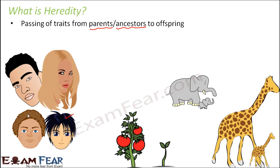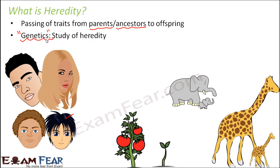So that is about heredity — how these traits are being passed on from one generation to another. We will talk about those principles, how it was discovered, and what contributions were made by different scientists. The study of heredity is known as genetics. Genetics is a very promising field of study even today because a lot of things are yet to be known and discovered, and many scientists are still working on it. It talks about how traits are being passed on from one generation to another, and the next two lessons will also be on genetics.